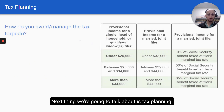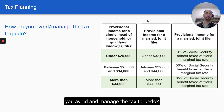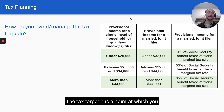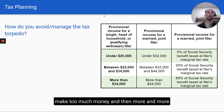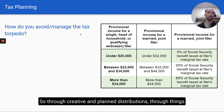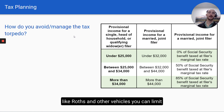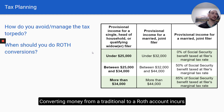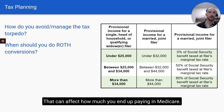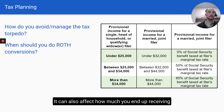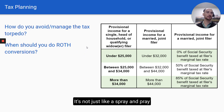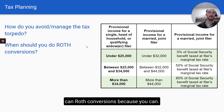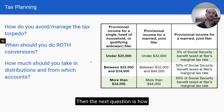Next is tax planning. The first question is how do you avoid and manage the tax torpedo? The tax torpedo is a point at which you make too much money and then more and more of your Social Security income gets taxed. Through creative and planned distributions using things like Roths and other vehicles, you can limit how much of Social Security gets taxed — but it requires careful planning. The other question is when should you do Roth conversions? Converting money from a traditional to a Roth account incurs taxable income in the year you do it, which can affect how much you pay in Medicare and how much of your Social Security is taxable. This has to be calculated — it's not a spray-and-pray approach.